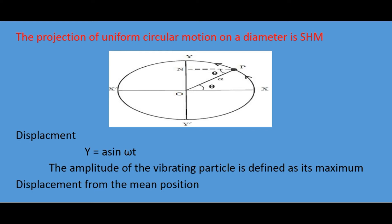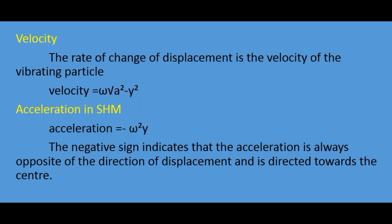The displacement is the distance traveled by the vibrating particle at any instant of time t from its mean position. When the particle is at P, the displacement y is written as y equals a sin omega t, where a is the amplitude. The amplitude of the vibrating particle is defined as its maximum displacement from the mean position.